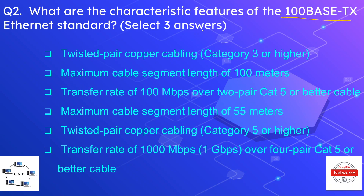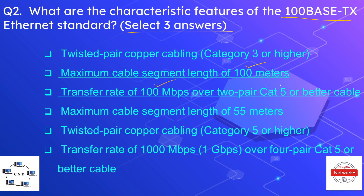Question number two: what are the characteristic features of the 100BaseTX Ethernet standard? Select three correct options. The correct options are: a maximum segment length of 100 meters, a transfer data rate of 100 megabits per second over two pairs of Cat 5 or better cable, and the use of twisted pair copper cabling of Cat 5 or higher.